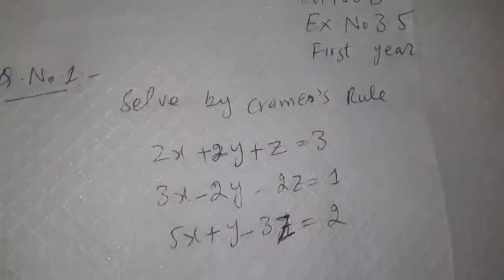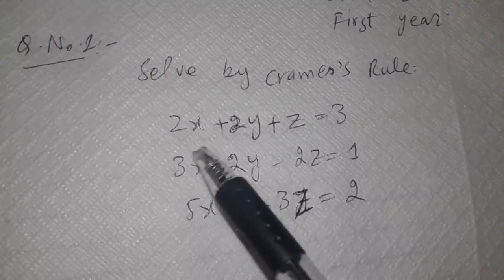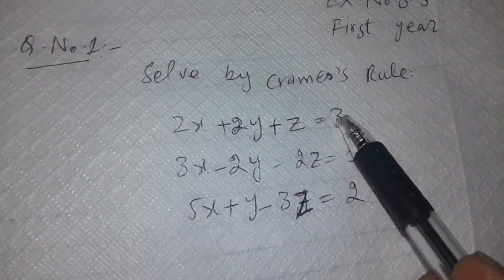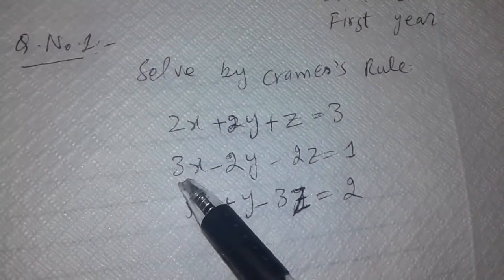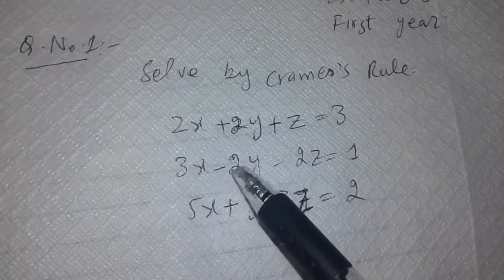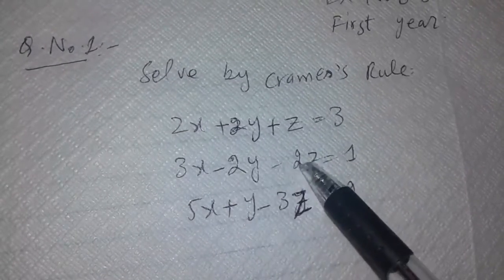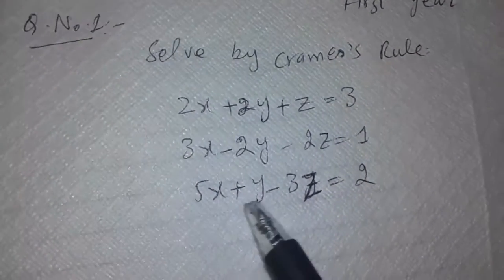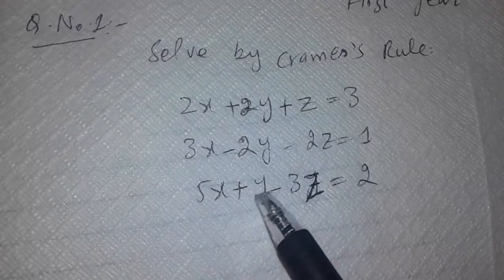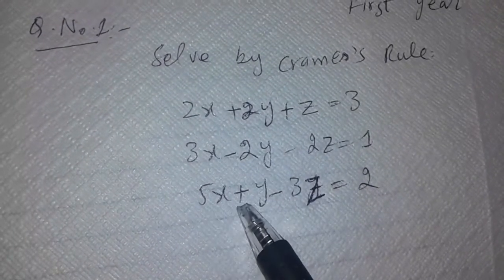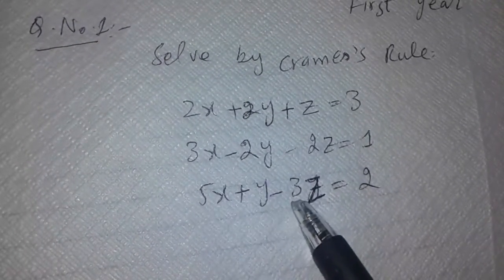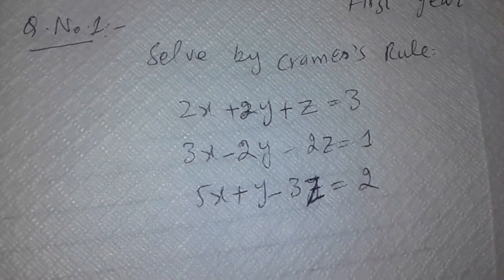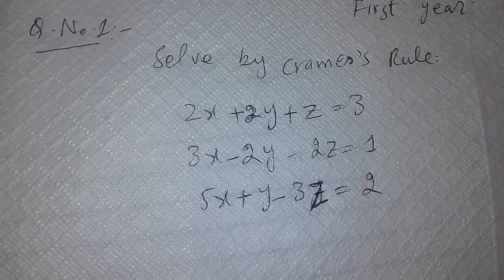We have three equations here. The first is 2x plus 2y plus z equals 3. The second equation is 3x minus 2y minus 2z equals 1. And the third equation is 5x plus y minus 3z equals 2. We have to solve it by Kramer's rule.